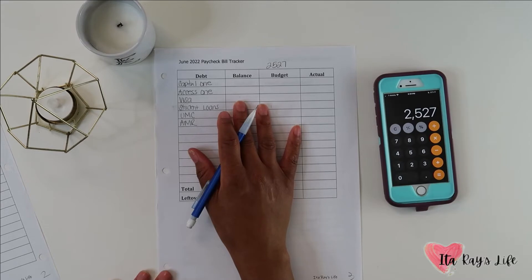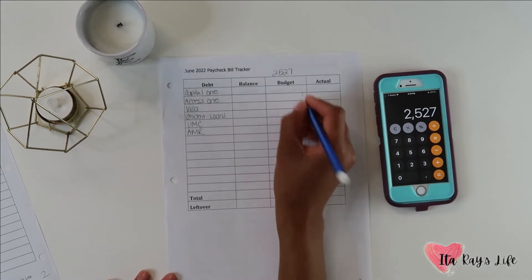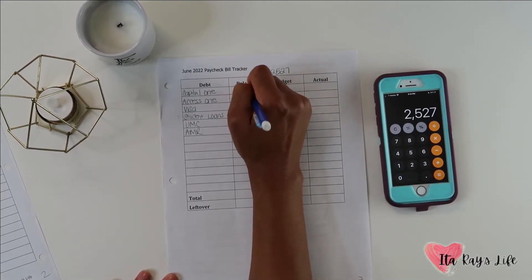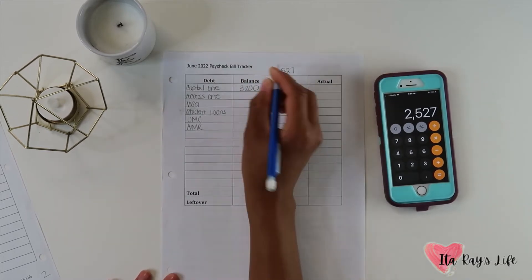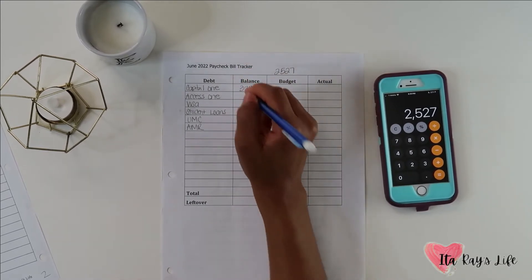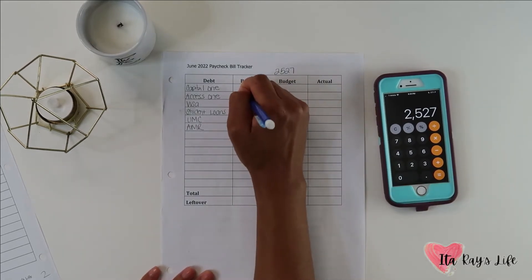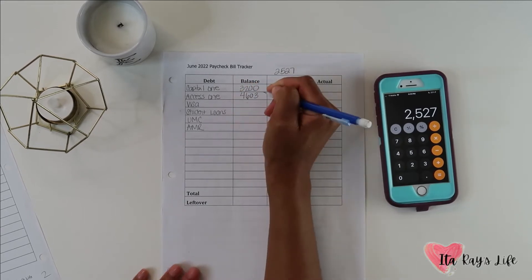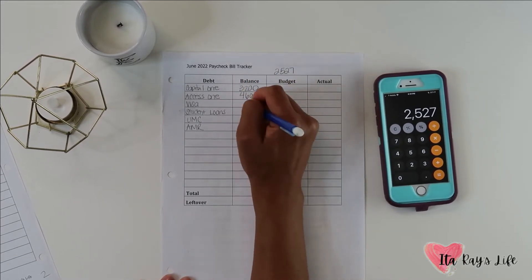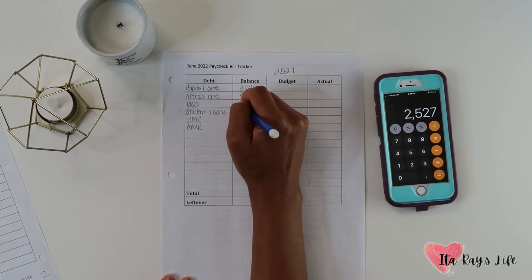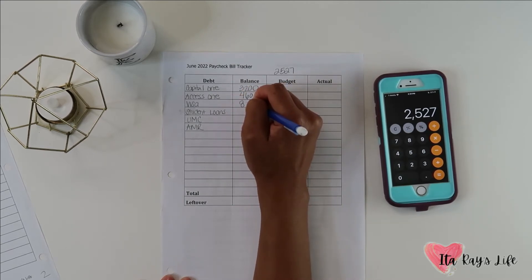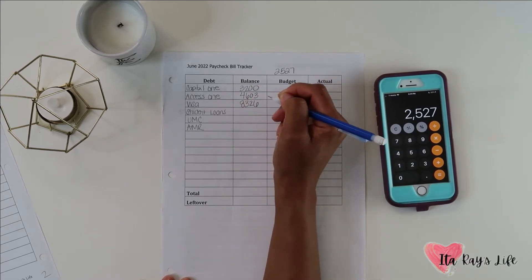My balance for capital one is $3,200. My balance for access one, I am not understanding what's going on. I think I added another bill to it and just forgot that I actually added it, but access one went up to $4,603. Visa I'm just going to say $8,000. Let's see, I'm gonna just put the same balance that it was last month, $8,326.